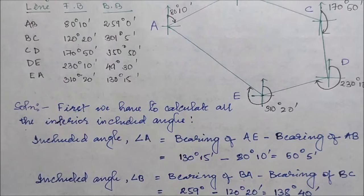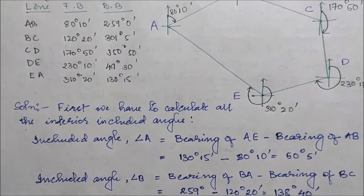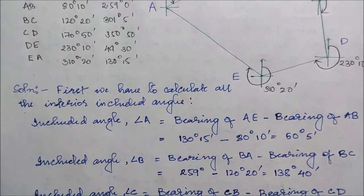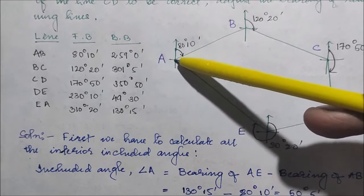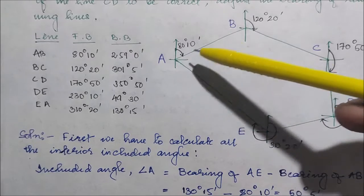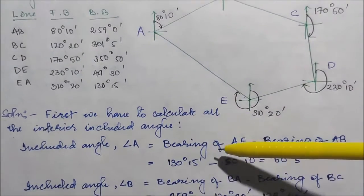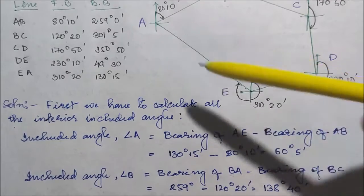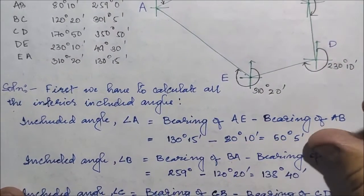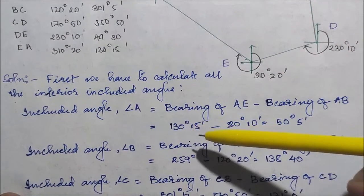We have to find out whether there is an error in the interior angles and then divide the error by the number of included angles to correct them accordingly. The included angle A is given by the bearing of AE — the previous line — minus the bearing of AB. The angle A = 130°15′ minus 80°10′ = 50°05′.